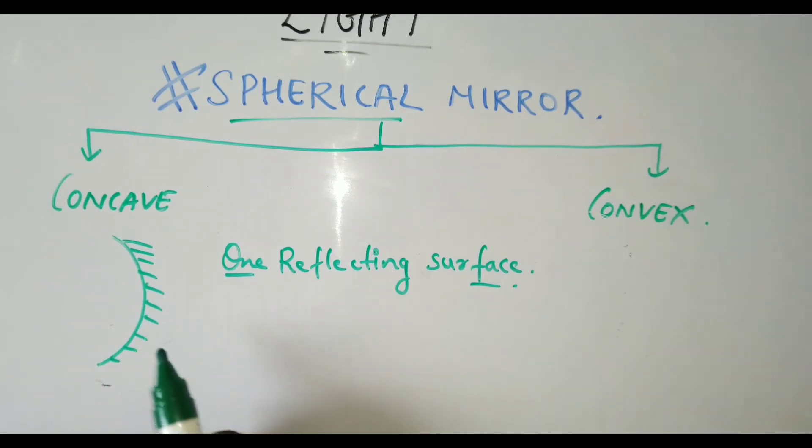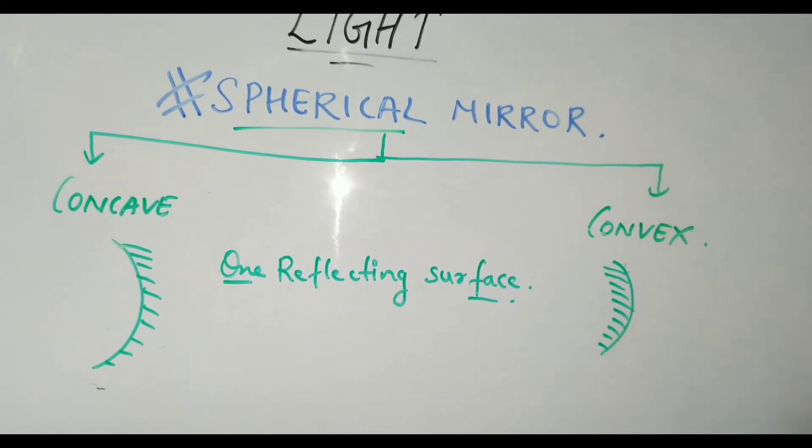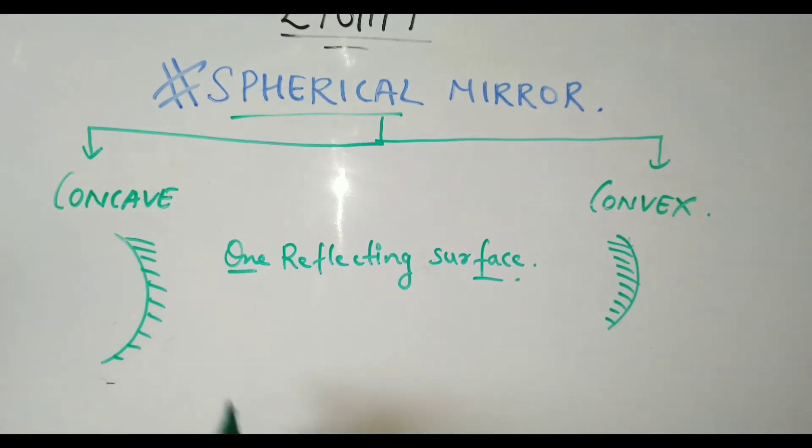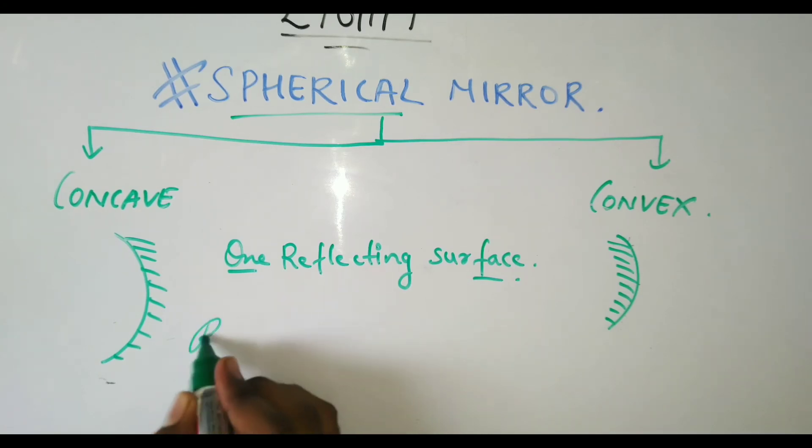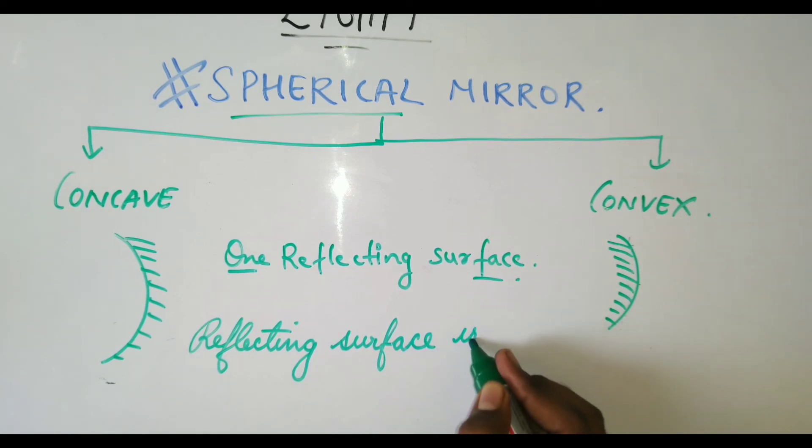Convex will be the inside part that will be painted. That's the difference. Now the concave mirror - the reflecting surface is curved inward.